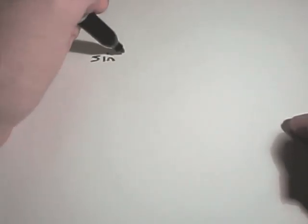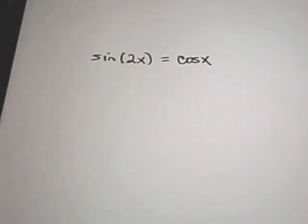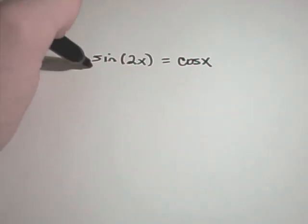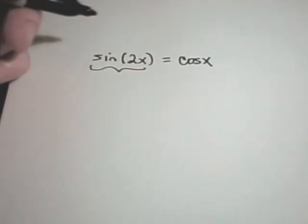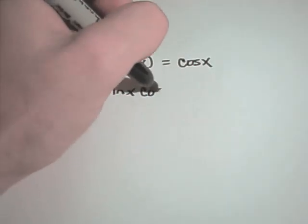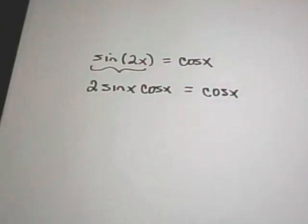Let's do a couple more — some that are maybe a little more difficult. Suppose we have sin(2x) = cos(x). One trick is to use trig identities. There's an identity for sin(2x) that says it's equivalent to 2sin(x)cos(x). On the right side we still have cos(x).